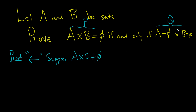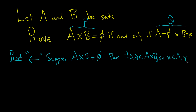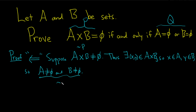Now we have to show that q is not true. What does it mean for it to be not empty? This means there exists an element — which is an ordered pair because this is the Cartesian product — (x, y) in A cross B. So what does this mean? This means that x is in A and y is in B. So this means that A is not empty and B is not empty. And that's the negation of q. So we started by assuming not p and then we showed not q.